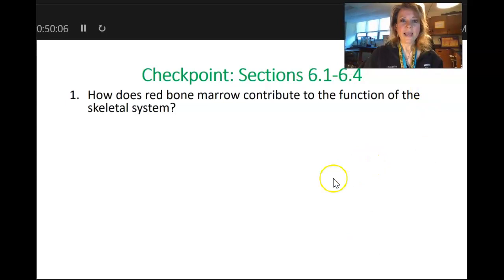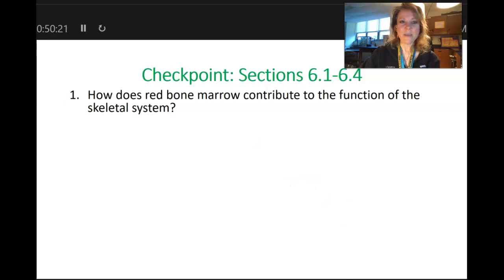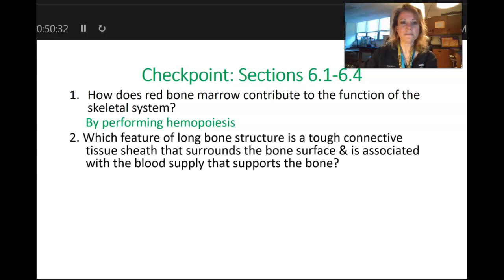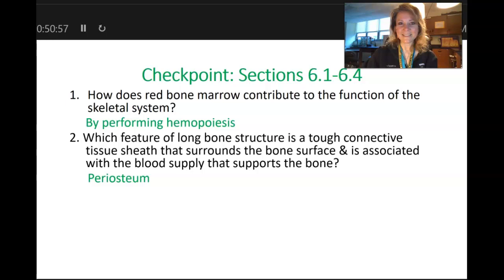Let's see what you remember. How does red bone marrow contribute to the function of the skeletal system? The answer: by performing hemopoiesis — creating red blood cells. Number two: which feature of long bone structure is a tough connective tissue sheath that surrounds the bone surface and is associated with the blood supply supporting the bone? If you said periosteum, you are correct.